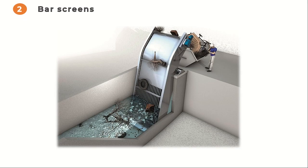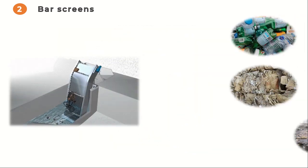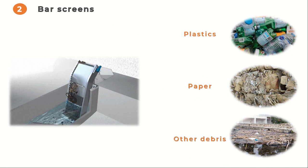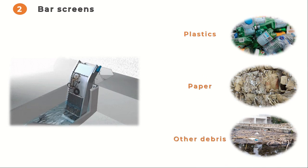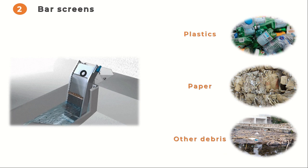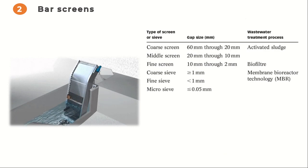The second step in the process is the use of bar screens. Wastewater passes through screens that are designed to remove large items such as plastics, paper, and other debris. This prevents these items from entering the treatment process and causing blockages or damage to the equipment. Wastewater treatment screens can be broadly classified into three categories: coarse, fine, and micro.